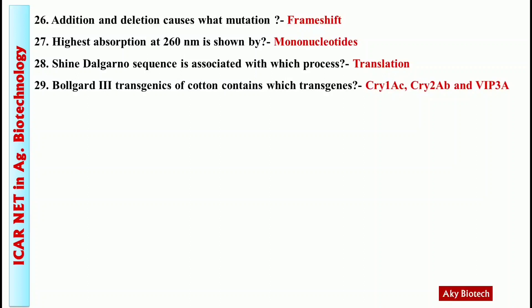Question 29: Bollgard 3 transgenics of cotton contain which transgenes? Answer: It contains three genes — Cry 1Ac, Cry 2Ab, and Vip3A.